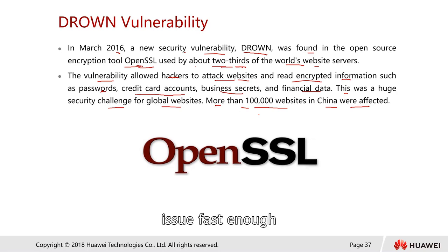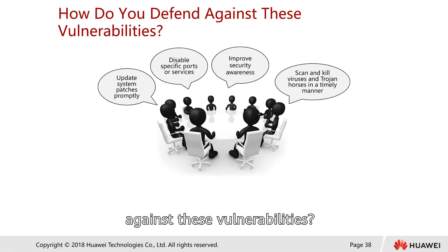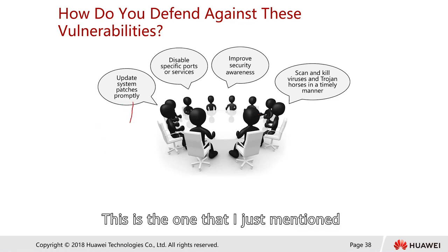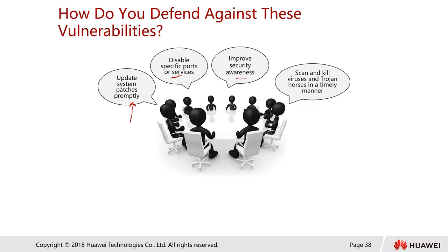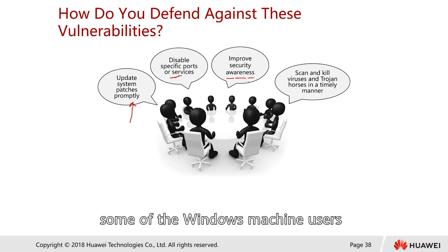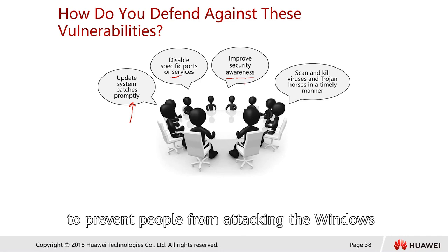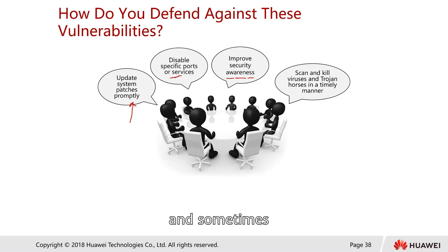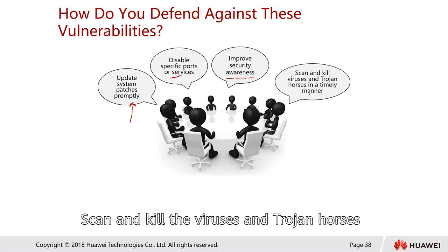If you patch issues fast enough, you can avoid being attacked. Defenses include: update system patches promptly and run system updates regularly; disable specific ports or services if unused; improve security awareness — for example, some Windows users disable the firewall and forget to turn it back on; and scan and remove viruses and Trojan horses in a timely manner using antivirus software.